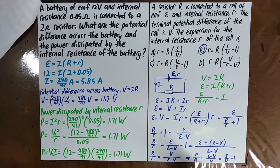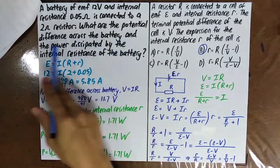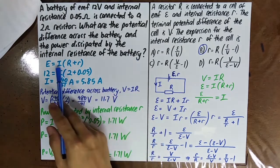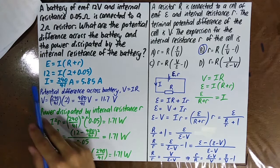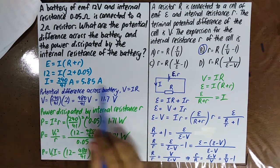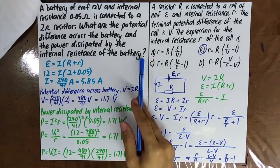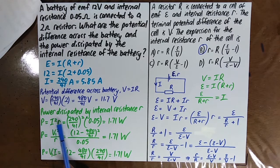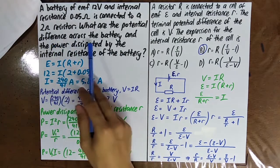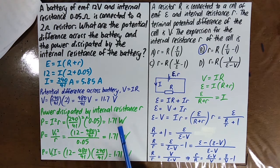A battery of EMF 12 V and internal resistance 0.05 Ω is connected to a 2 Ω resistor. Using E equals I(R plus r), you can find the current. The potential difference across the battery equals V equals IR, which is also the potential difference across the resistor. The power dissipated by the internal resistance is P equals I squared r, where r is the internal resistance. If instead you want the power dissipated by the external resistor, use P equals I squared R. Different formulas give the same answer.